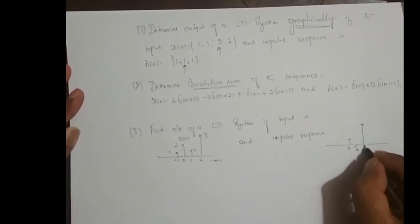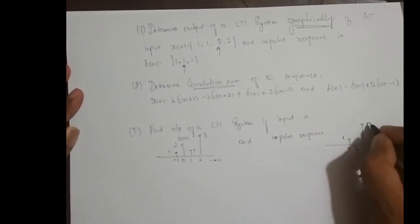0, 0, 1, 2. This is 1, this is minus 1, and this is 2.